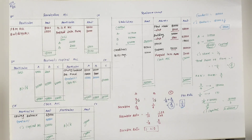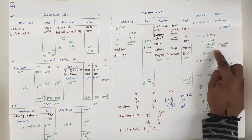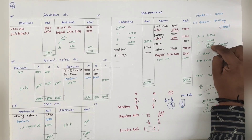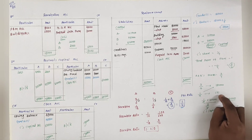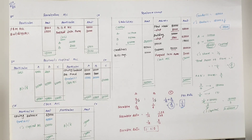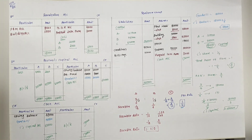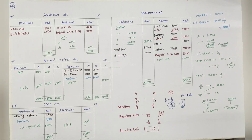तो यह था हमारा Question number 28. नया क्या था? New partner जो भी आता है, वो कितनी capital लाता है - वो नहीं बताया, proportionate capital बोला है. Old partners का balance find किया, total लगाया, और formula लगा के new partner की proportionate capital find की. Next lecture में देखेंगे Question number 29 और 30 - उसमें कुछ नया होगा. तो तब तक के लिए जय हिन्द, जय भारत.